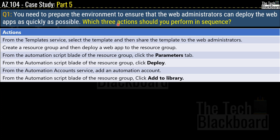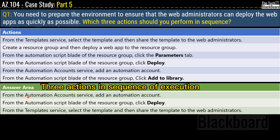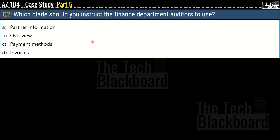The correct answer sequence is: first, from the Automation Accounts service, add an automation account; second, from the Automation Script blade of the resource group, click Deploy; and third, from the Template service, select the template and share it to the web administrators.